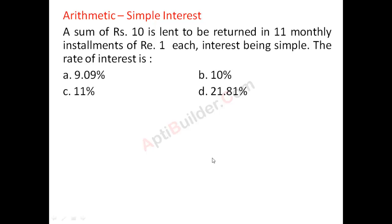A sum of rupees 10 is lent to be returned in 11 monthly installments of rupee 1 each, interest being simple. The rate of interest? In this case of simple interest, you just divide the time by 2.